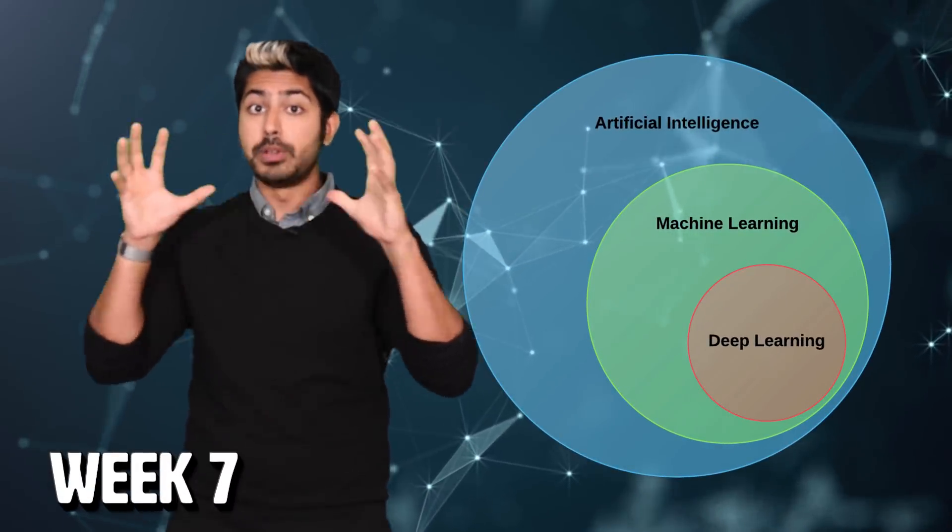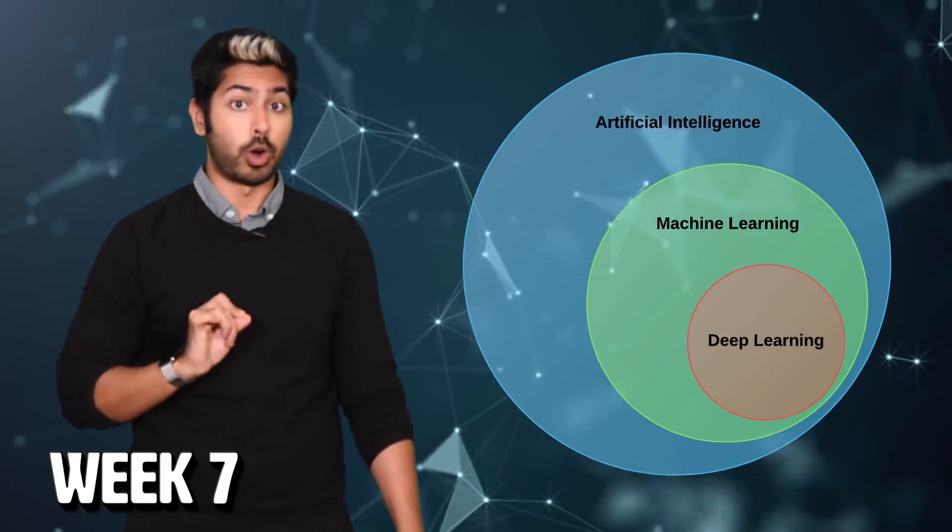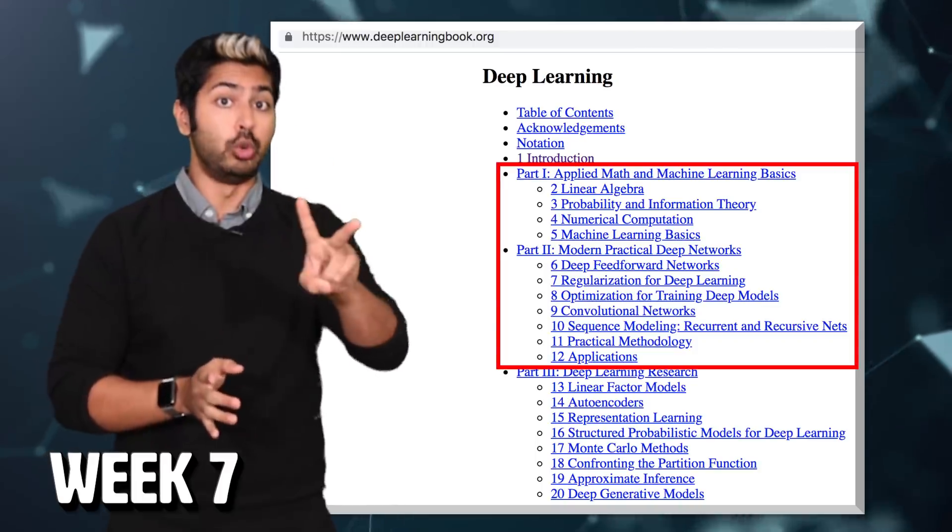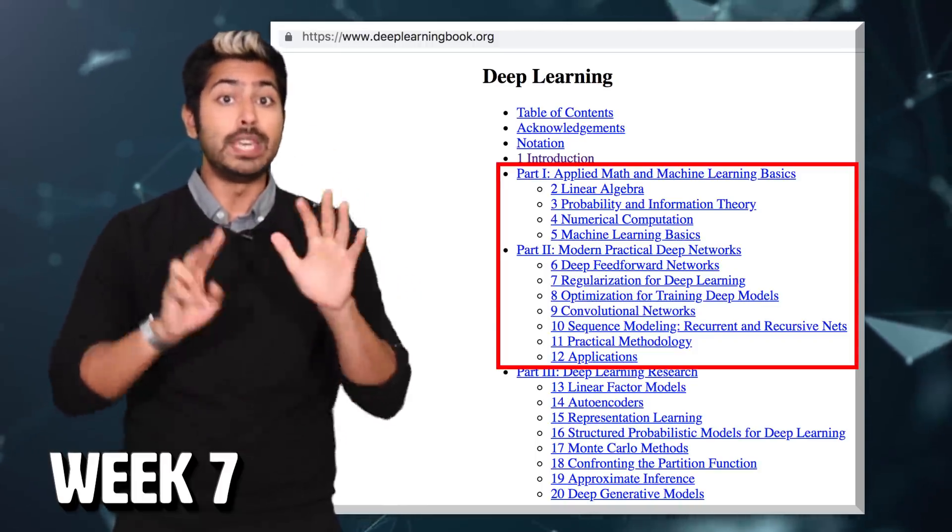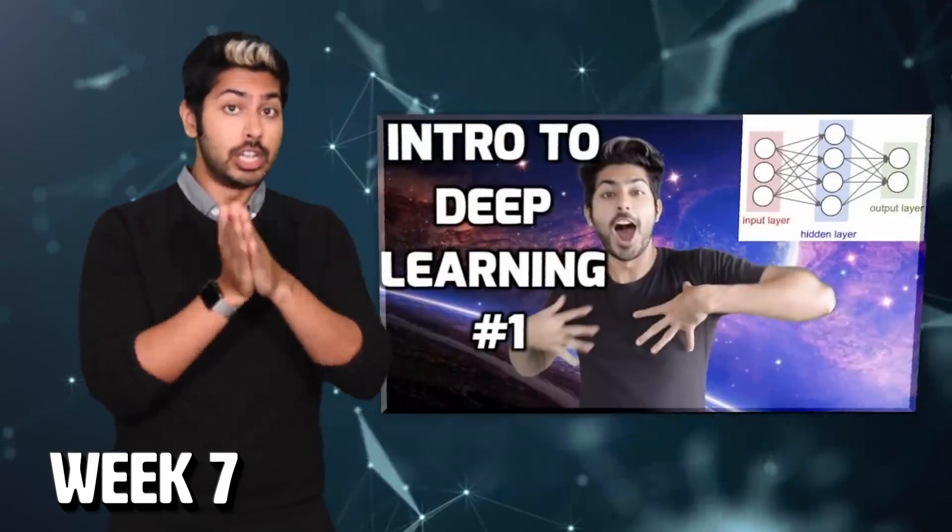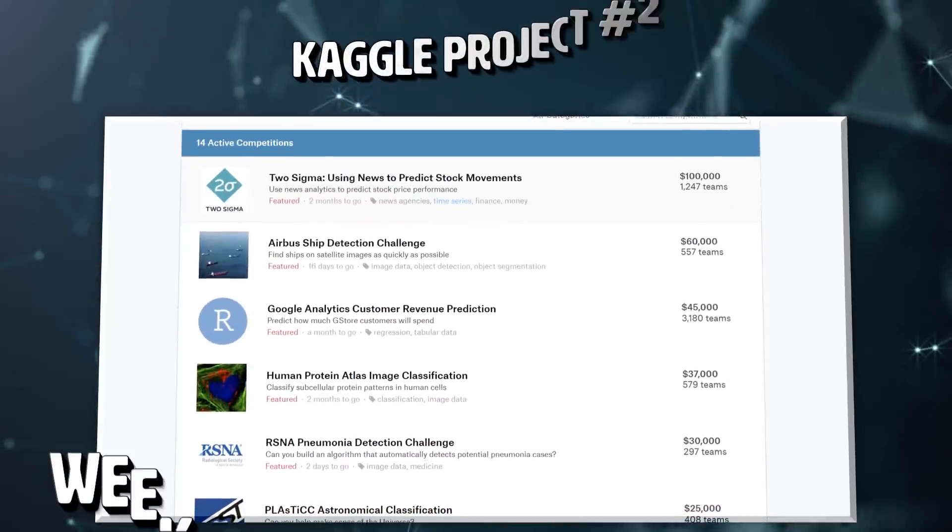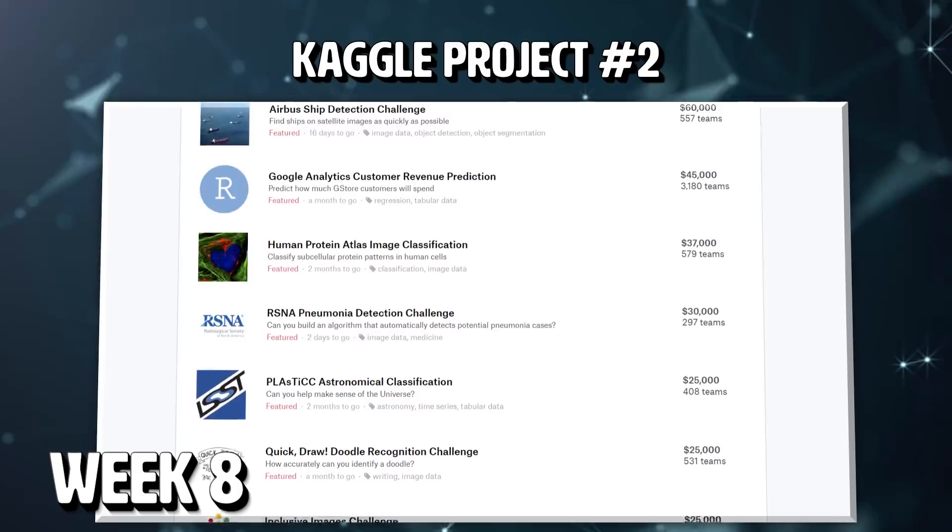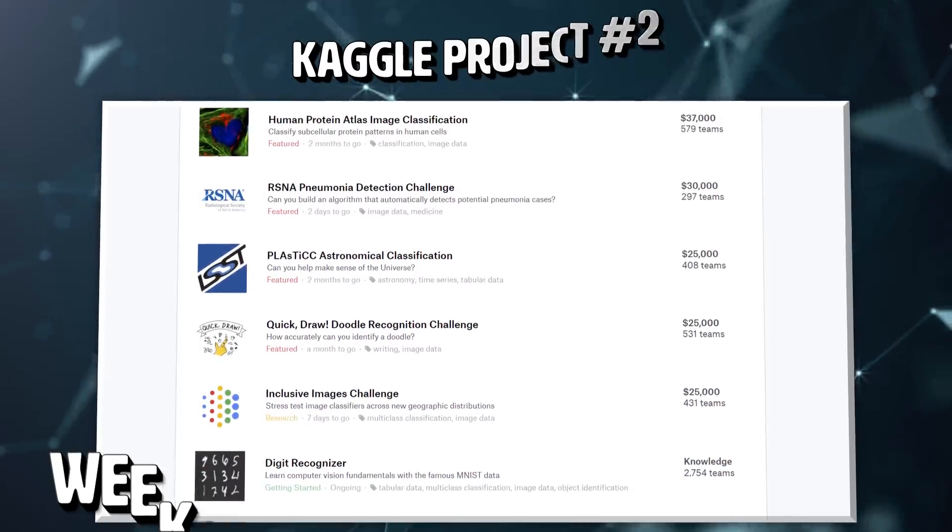Deep learning is the subset of machine learning focused on just one type of model, neural networks. The online deep learning book, specifically parts one and two, will get you up to speed on deep learning very fast. So spend week seven reading that. Additionally, I've got a deep learning playlist on YouTube that's very extensive. For week eight, it's time for Kaggle project number two, this time with a focus on different ways of using either machine learning or deep learning to solve a problem.